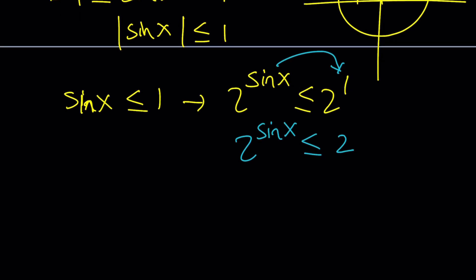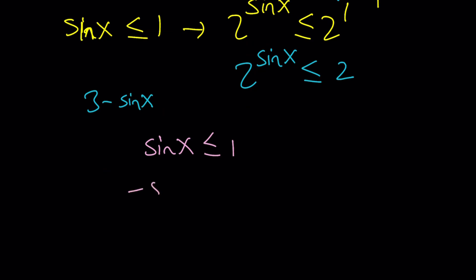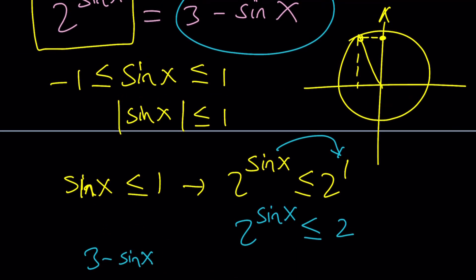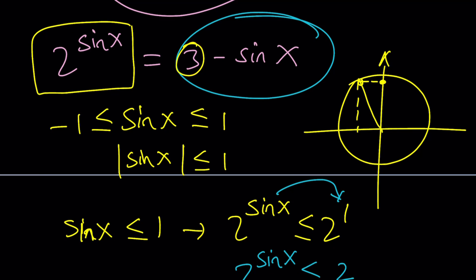That means the maximum value for 2 to the power sine x is equal to 2. Great. What about the right hand side? That's what we're going to look at now. 3 minus sine x. Now we now know that, let's go ahead and write it down here for reference. We now know that sine x is between negative 1 and 1. So how can I use that information? Maybe I can use this side. Sine x is less than or equal to 1. And I multiply both sides by negative 1. As you know, if you multiply or divide by a negative number, you must flip the inequality for obvious reasons. I hope those are obvious.